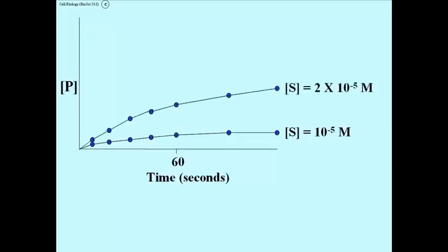If we double the concentration, so we use a concentration of substrate at 2 times 10 to the minus 5th molar, we get a faster production of product. If we use 4 times 10 to the minus 5th molar, we get even faster production of product. More product produced per second.